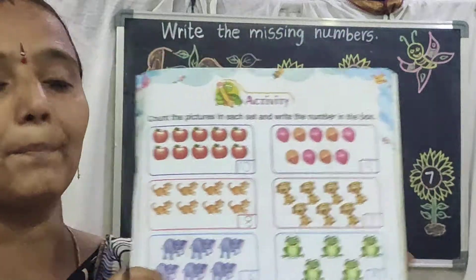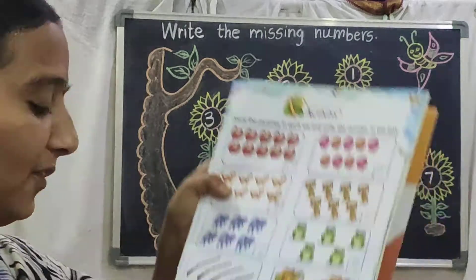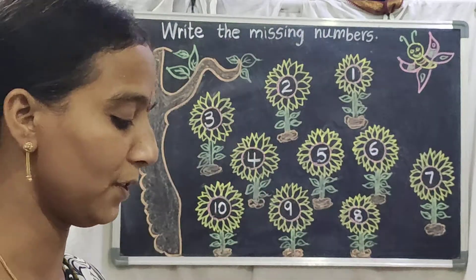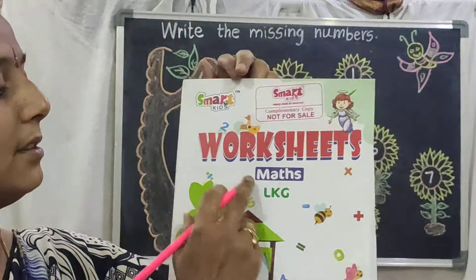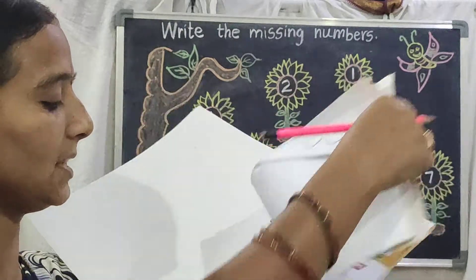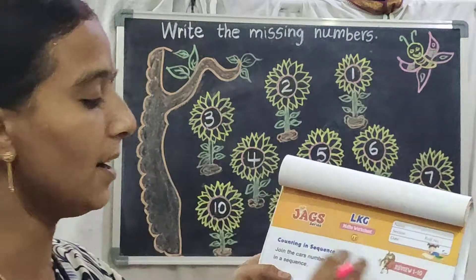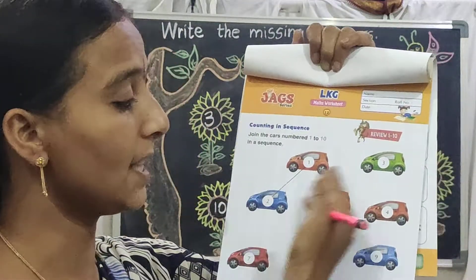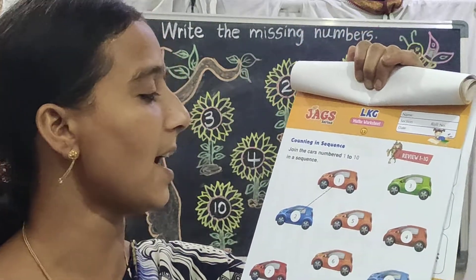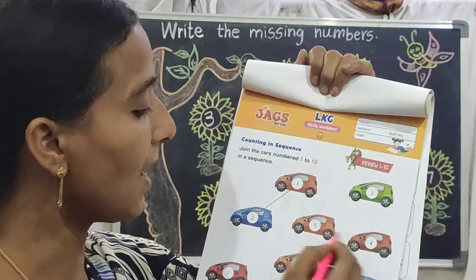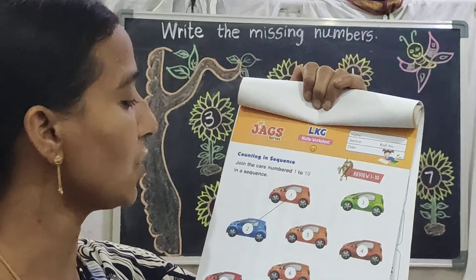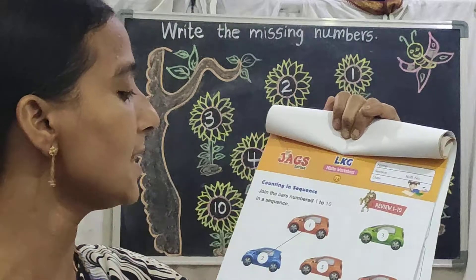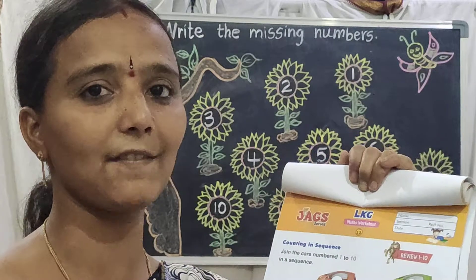Like this we should complete this activity page. After completing this page, you take out your worksheet — number 1 worksheet. All of you take out your number work worksheet and open it. Open page number 12. See here — what are you seeing here? These are cars. Each and every car they have given numbers. So what we should do? Already we learned 1 to 10 numbers, so here we are joining these cars by using 1 to 10 numbers in sequence, line wise.